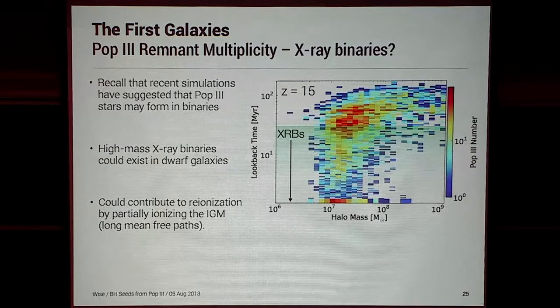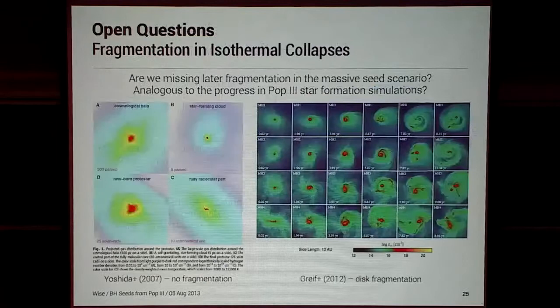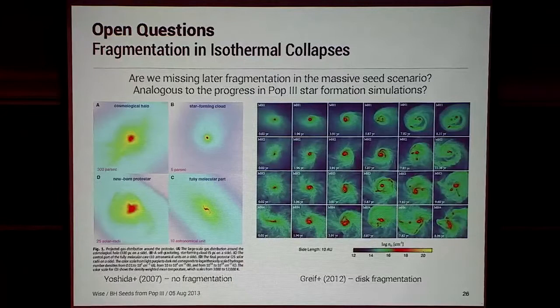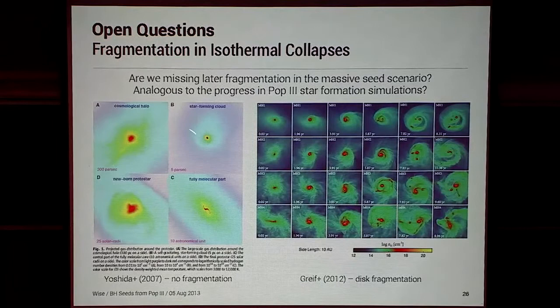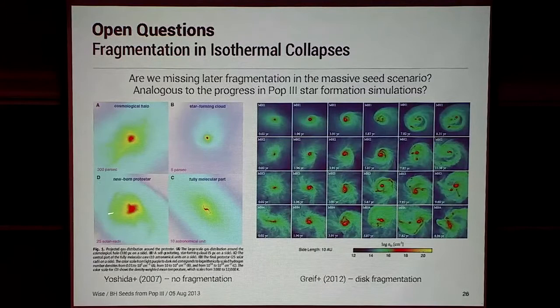That's all I wanted to present on most recent work, but I want to spend the last few minutes on some questions I'd like to pose. There's a connection between what this field is going through and what Pop III star formation simulations are going through: are we just not simulating these systems far enough to actually see fragmentation? We might form some central black hole, but what actually forms after that? What kind of galaxy forms around this black hole? Making the analogy with Pop III stars — in 2007 and before, people didn't find fragmentation going all the way down to the protostellar shock.